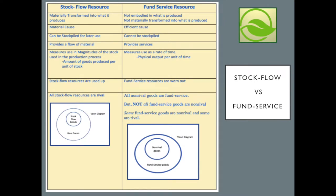Ecosystem services are a fund service. Let's review the difference between a stock-flow resource and a fund service resource. Stock-flow resources are materially transformed into what they produce — we call this idea material cause. Stock-flow resources can be stockpiled for later use and provide a flow of materials for economic processes. They are measured in magnitudes of the stock itself — how much timber or flour is needed. The magnitude is measured by the amount produced per unit of stock. Stock-flow resources are used up in the production process, and all stock-flow resources are considered rival.